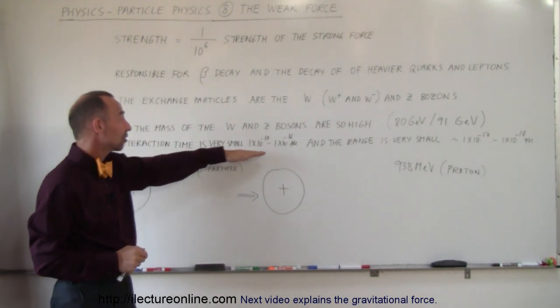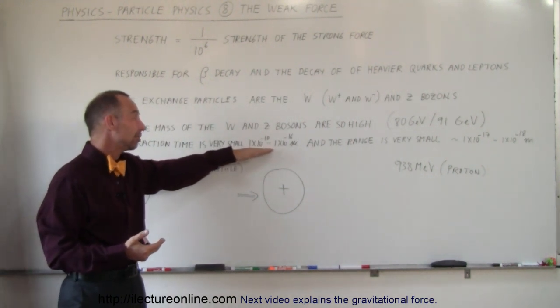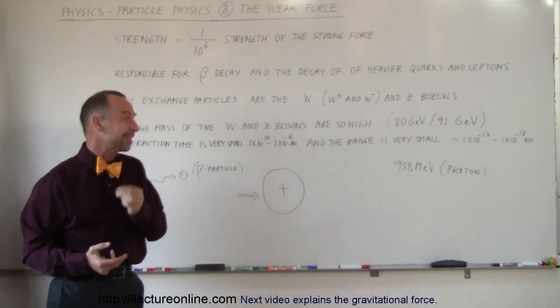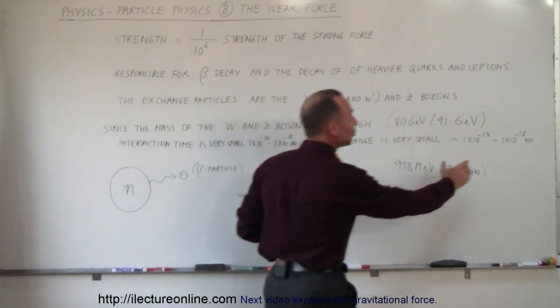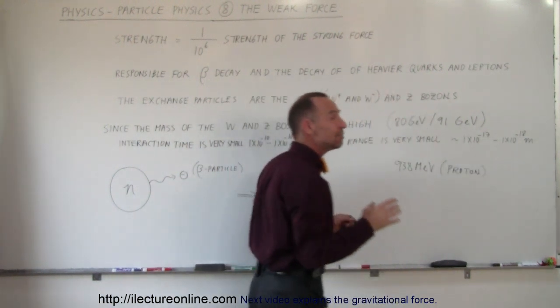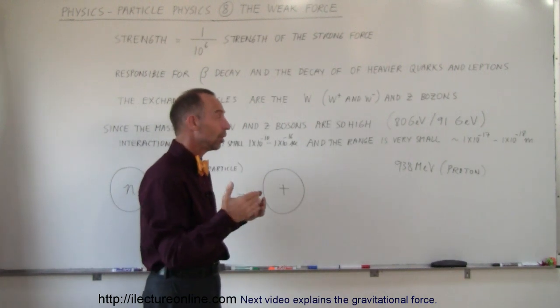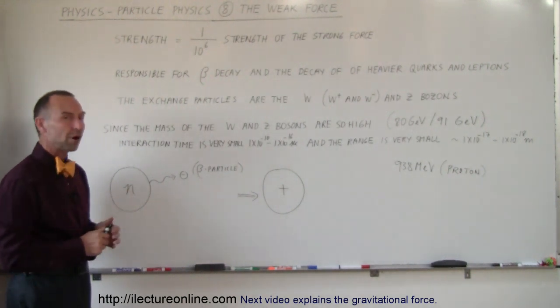It only exists for a very tiny amount of time. For example, the interaction time is extremely small, anywhere from 10 to the minus 10 to 10 to the minus 16 seconds. So therefore also the range is very small. Notice that the range is somewhere in the order of 10 to the minus 17 to 10 to the minus 18 meters, which means it's somewhere in the order of 1/100 to 1/1,000 the diameter of a neutron.